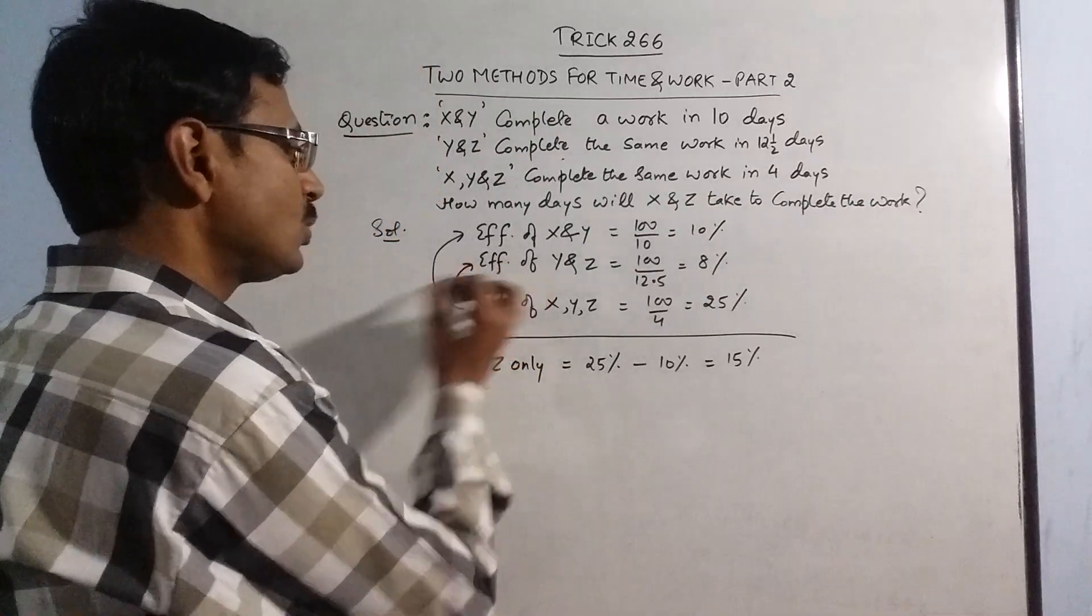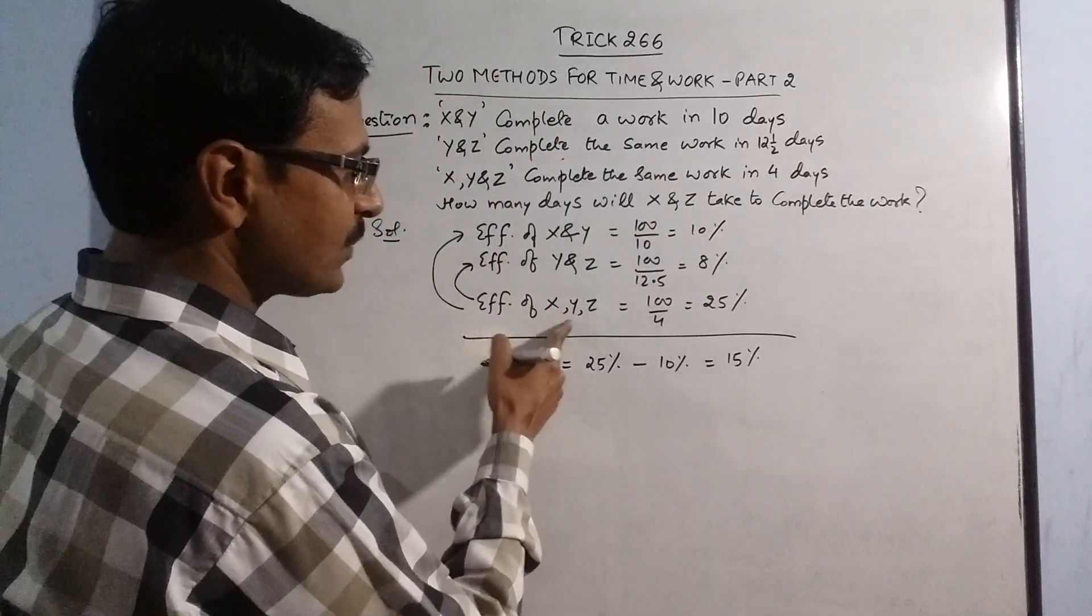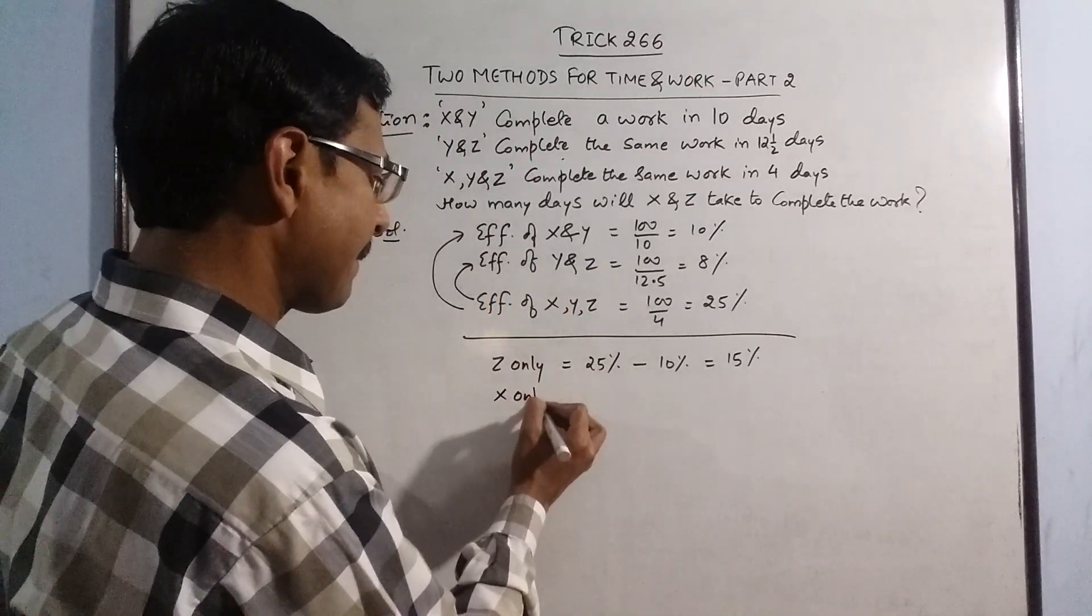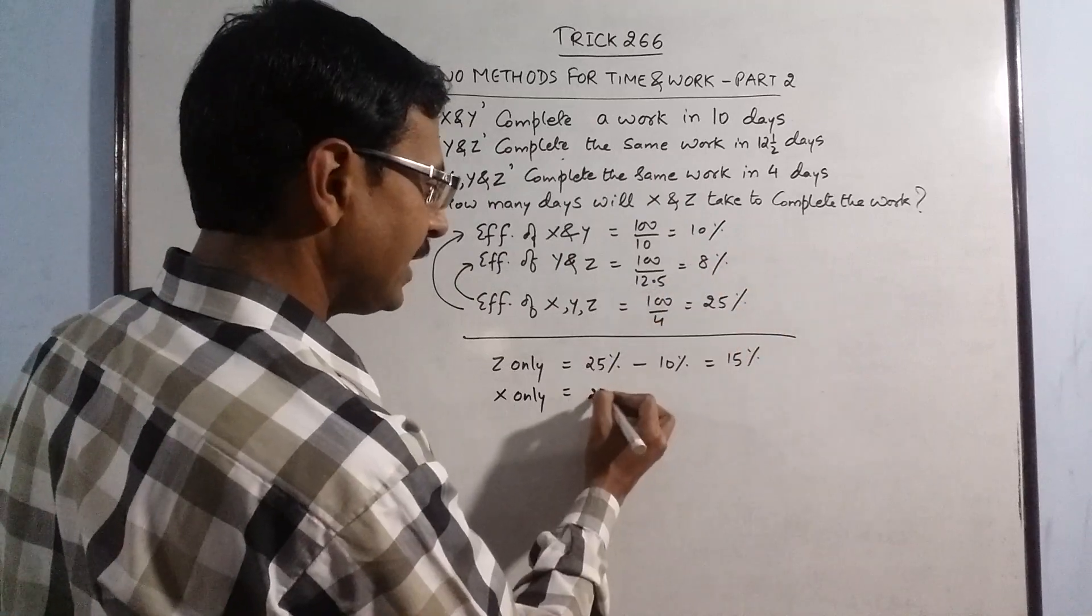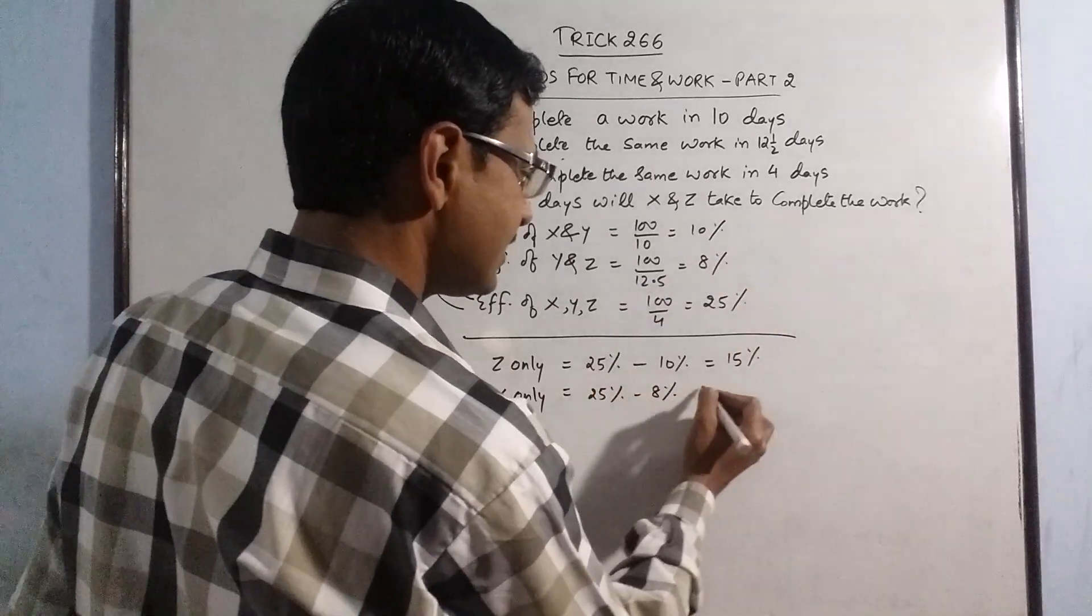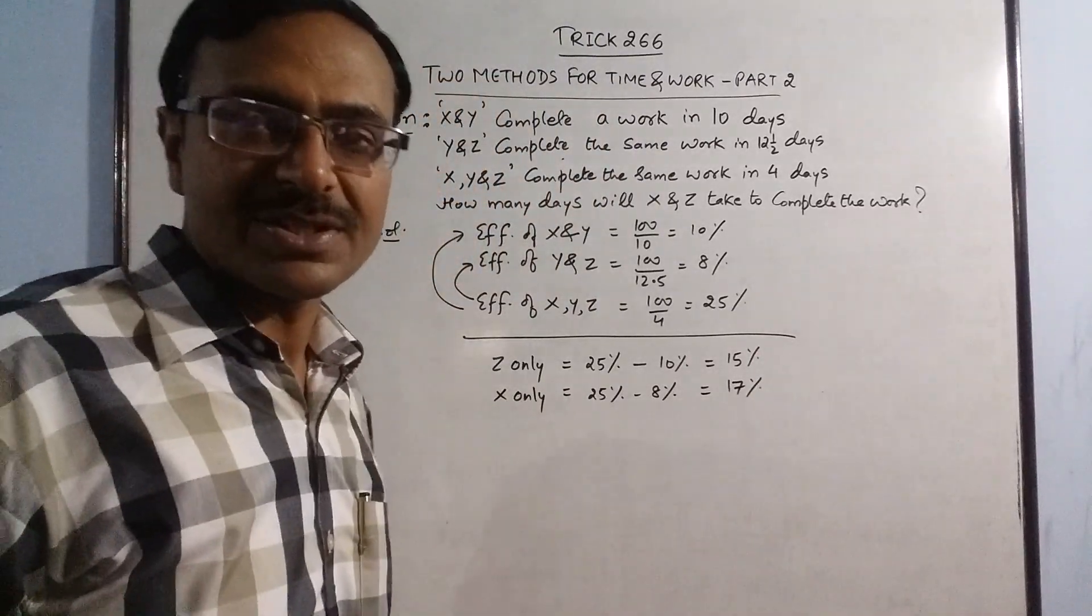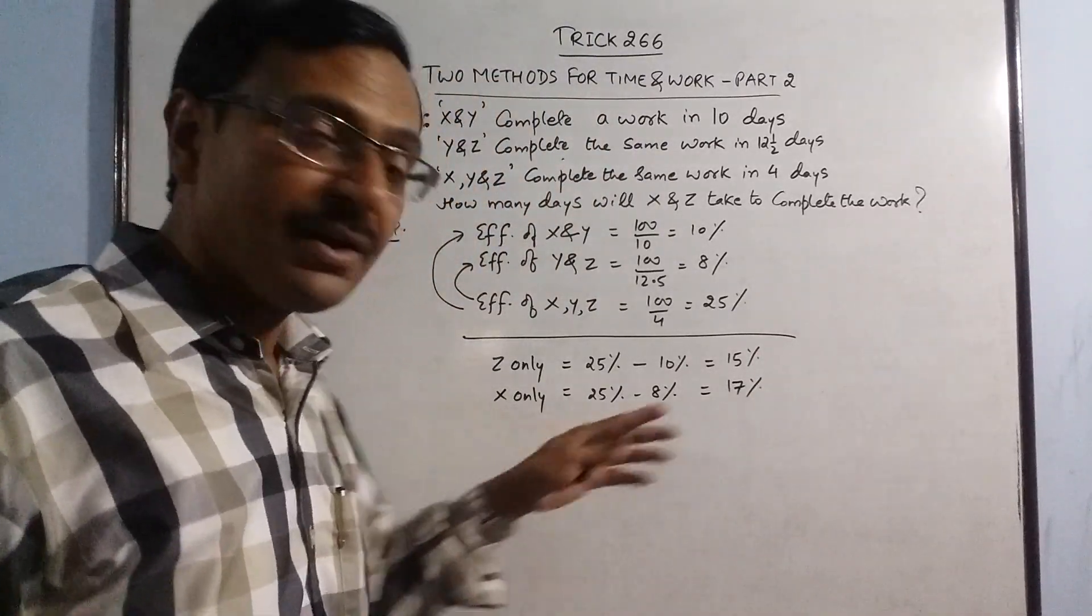Similarly when you subtract these two, x, y, z and y, z, so only x remains. So x only 25 minus 8, so that is 17 percent. So now I have found out the efficiencies of x and z alone.